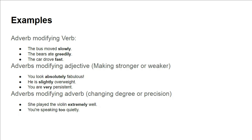'The car drove fast.' Fast is an adverb linked with the verb 'drive' — its past simple form is 'drove.' So fast describes how the car was driven.